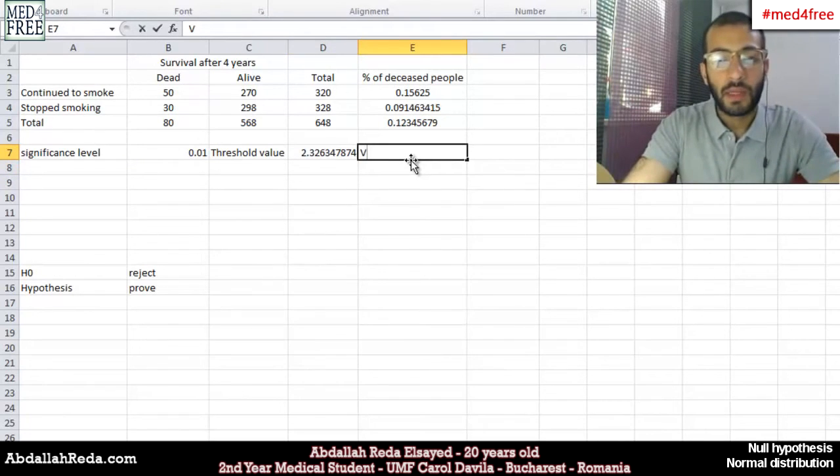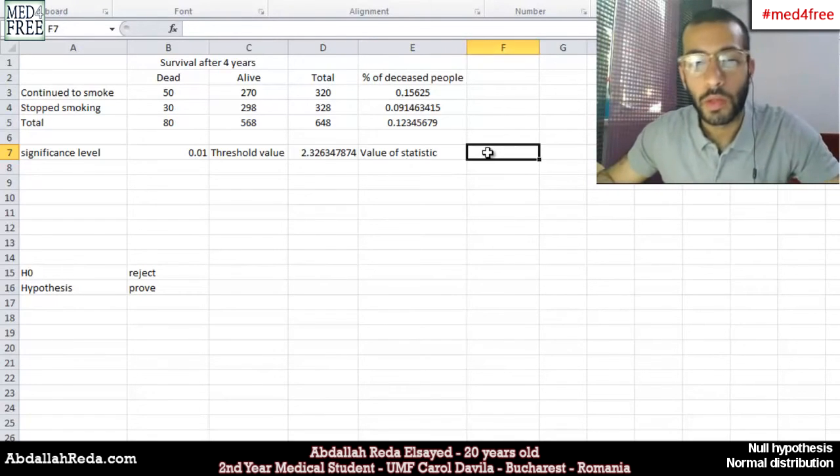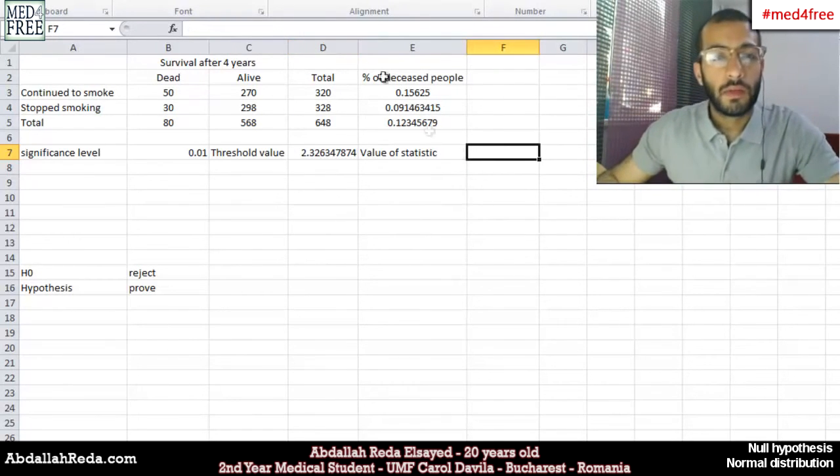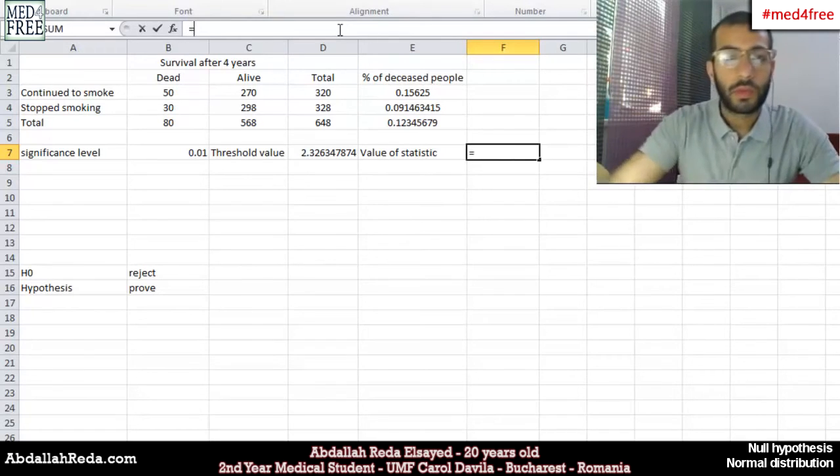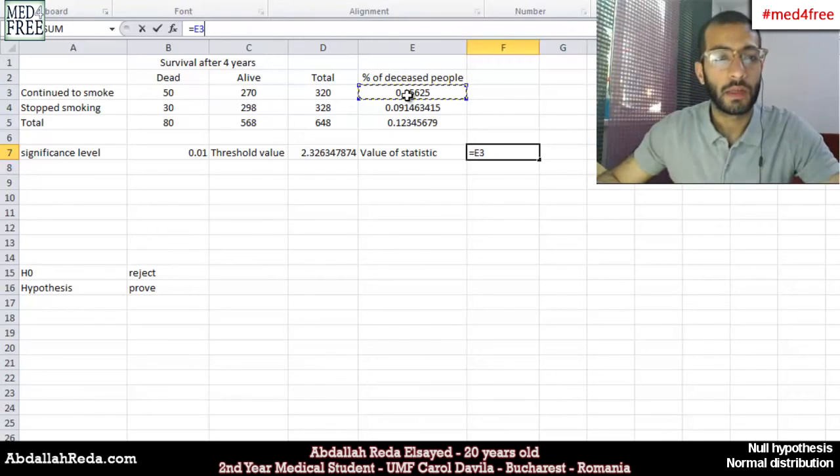And then we have the value of our statistic. And we would write it here. So we'll compare this value to that value. The value of statistic equals, this is how you calculate the value of statistic. You take this value. So the people who continue to smoke, how many of them died.